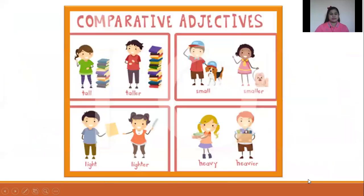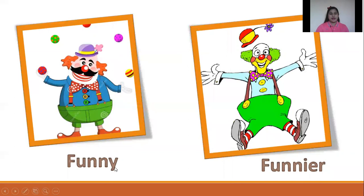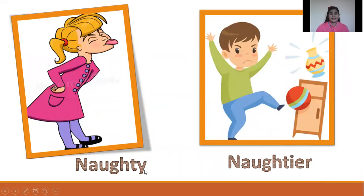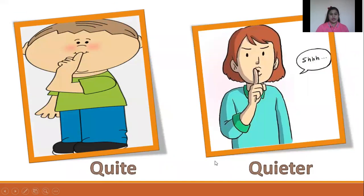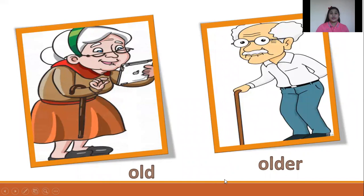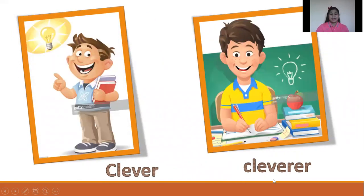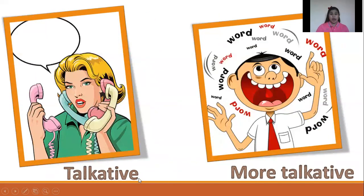And comparative adjectives: Tall, taller. Small, smaller. Light, lighter. Heavy, heavier. Funny, funnier. Naughty, naughtier. Quiet, quieter. Old, older. Clever, cleverer. Talkative, more talkative.